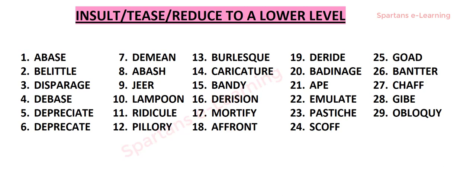Our first word is abase. Abase is a verb meaning to degrade or humiliate. Our next word is belittle. Belittle is a verb meaning to disparage, to depreciate, or to lower someone's dignity — so belittle means to insult. Our next word is disparage. Disparage means to belittle, so belittle and disparage are one and the same. Disparage means to lower someone's dignity.